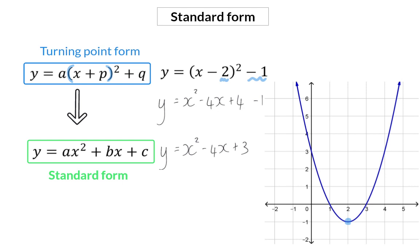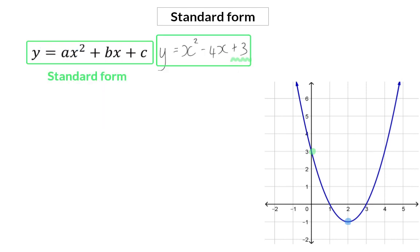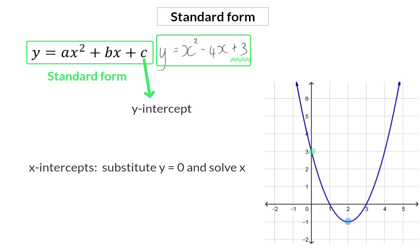Let's now focus on this simplified standard form of the equation. In this equation, we cannot see the turning point anymore. But you will see that the constant value at the end now corresponds with the y-intercept of the graph. So when an equation is given in the standard form of y equals ax squared plus bx plus c, you can immediately read off the y-intercept. The c value also still indicates the vertical translation.